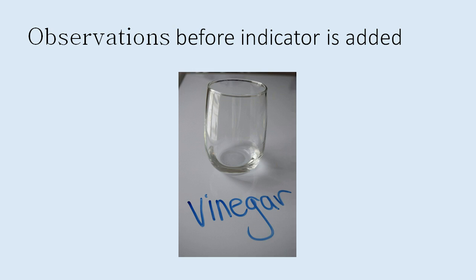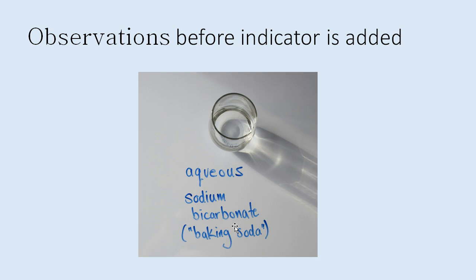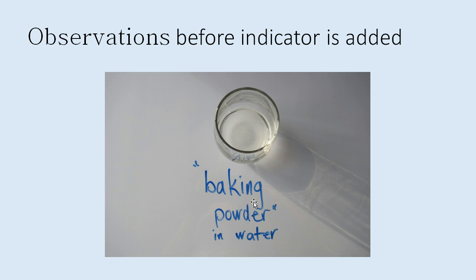Next, we have some aqueous sodium bicarbonate. Sodium bicarbonate is the chemical name for baking soda. If you're wondering about chemical formulas, you can look at your table of common ions — you'll see sodium (Na) and bicarbonate (HCO₃⁻ with a charge of minus one).